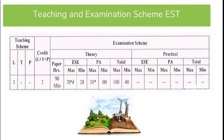Next comes the teaching and examination scheme of the EST subject. For this subject we have three theory lectures, meaning three hours per week. The theory part is divided into two parts: ESE, that is End Semester Examination, which is composed of 70 marks and conducted as an online examination. PA, that is Progressive Assessment, has 30 marks divided into two parts: 20 marks for the average of sessional examinations conducted throughout the semester, and 10 marks for the micro project. This paper has no practicals, giving a total weightage of 100 marks.